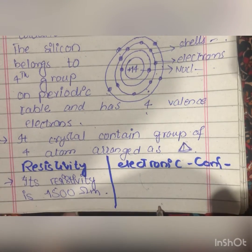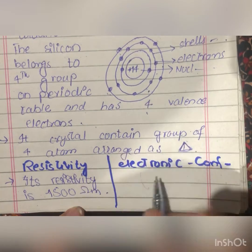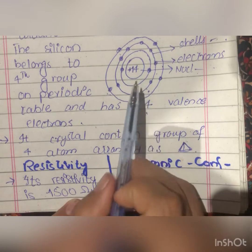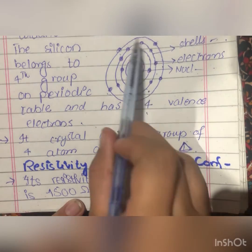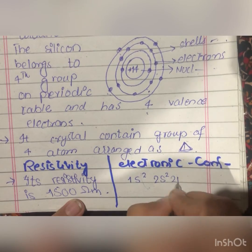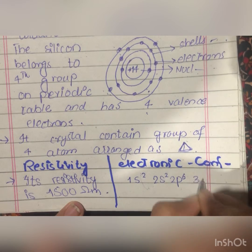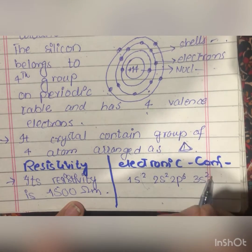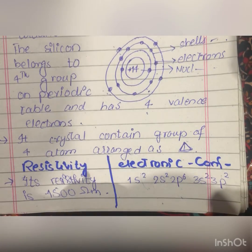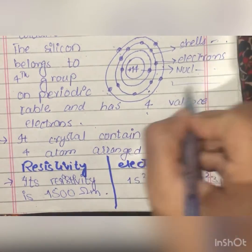The electronic configuration of silicon: here we have 2 electrons — 1s². Here we have 8: 2s², 2p⁶. And here we have 4: 3s², 3p². This is the electronic configuration, and this diagram shows the holes in silicon.